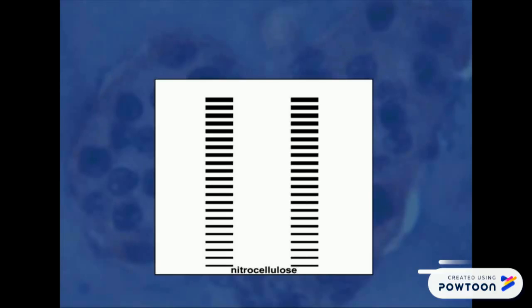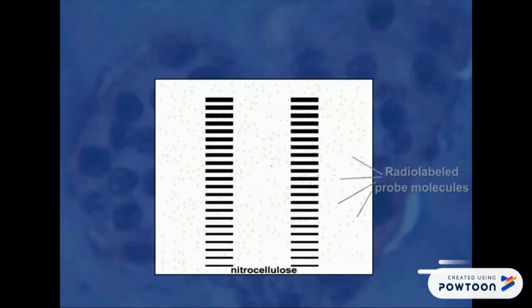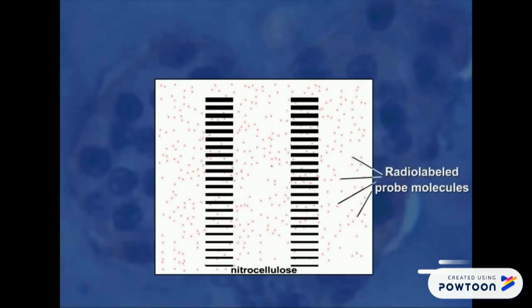The DNA strands are denatured. Radio-labeled probe molecules are then added that are complementary to sequences in the genome that contain repeat sequences. These repeat sequences tend to vary in their length among different individuals and are called variable number of tandem repeat sequences, or VNTRs.